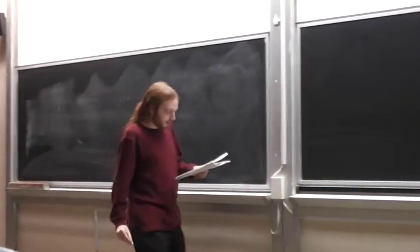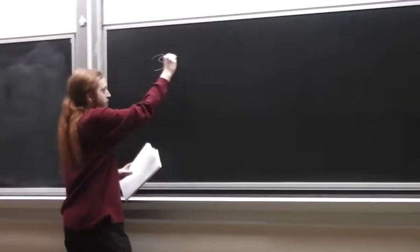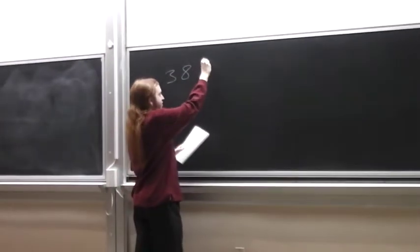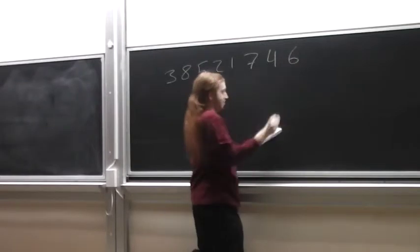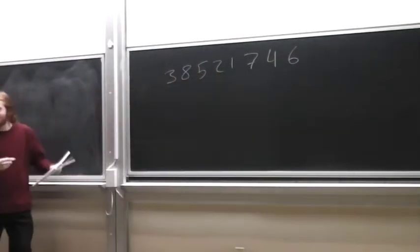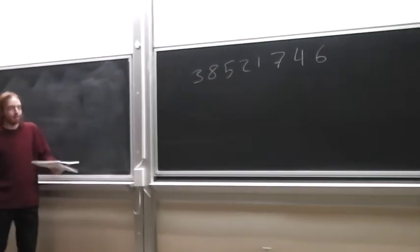So what's a permutation? The definition of a permutation is something that looks like this. So it's a list of the first n numbers in order, in some order.